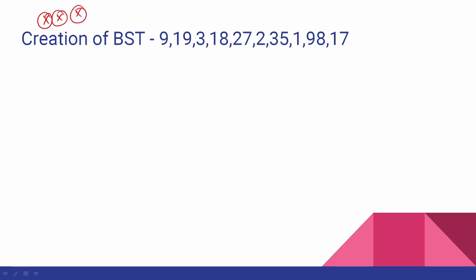This is a very important question in the exam. If you have a set of numbers, you can create a binary search tree — it's very simple. Follow the BST logic. The first element is 9, so 9 is inserted as the root. The second element is 19; since 19 is greater than 9, it goes to the right.